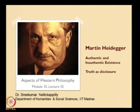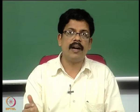Heidegger is in that sense a very important thinker. In this lecture we will be dealing basically with two issues: first, authentic and inauthentic existence of Dasein; second, the concept of truth — the notion of truth as disclosure or unconcealment. Before discussing these themes, we have to elaborate a little on the concept of Dasein, which we introduced in the previous lecture.